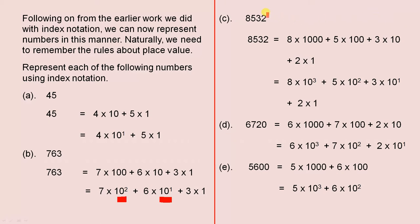8532: the ones column, the tens column, the hundreds column, and the thousands column. So 8532 is 8 times 1000 plus 5 times 100 plus 3 times 10 plus 2 times 1, which is 8 times 10 to the power of 3 plus 5 times 10 squared plus 3 times 10 to the power of 1 plus 2 times 1. And there's the index notation.